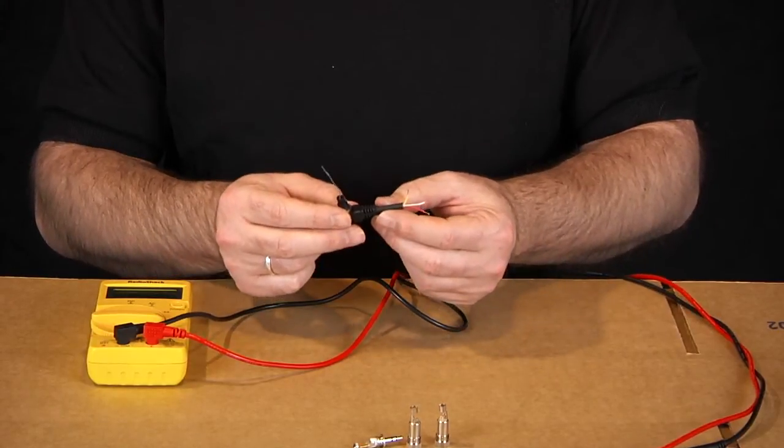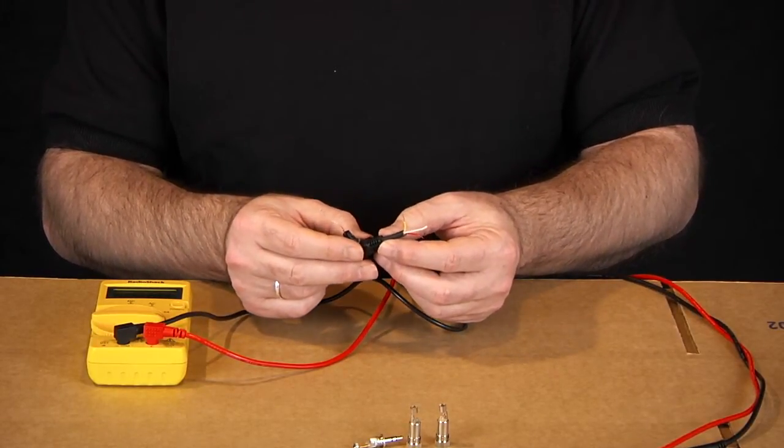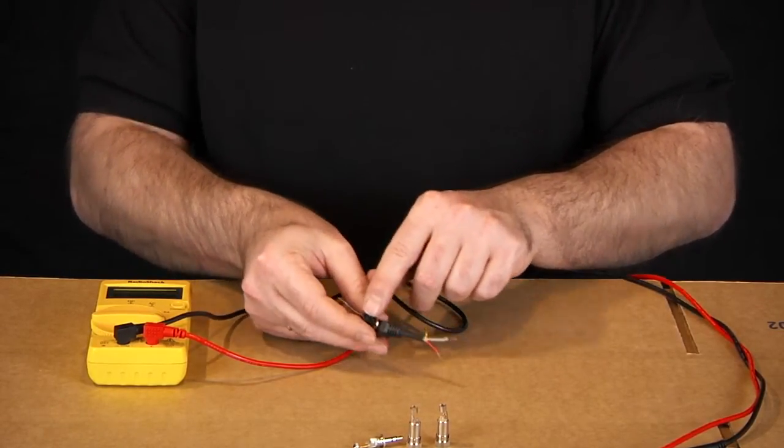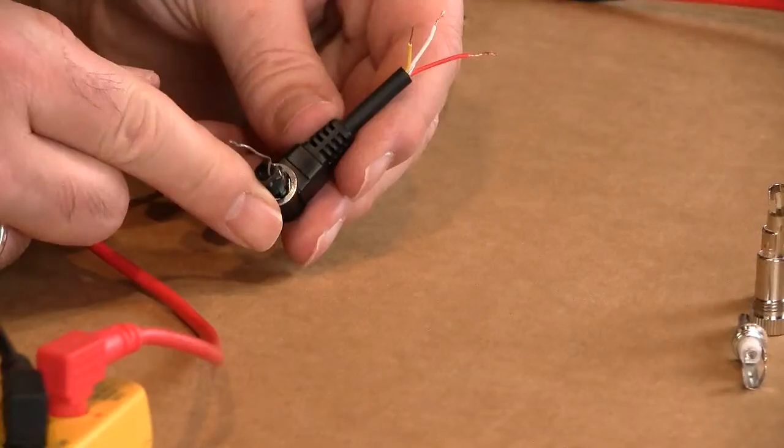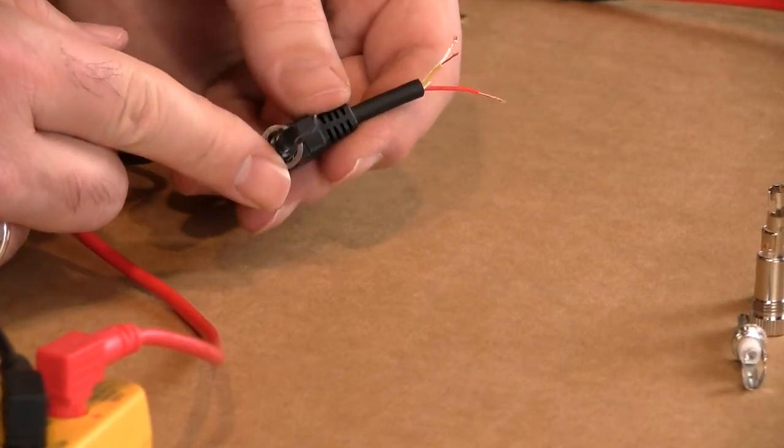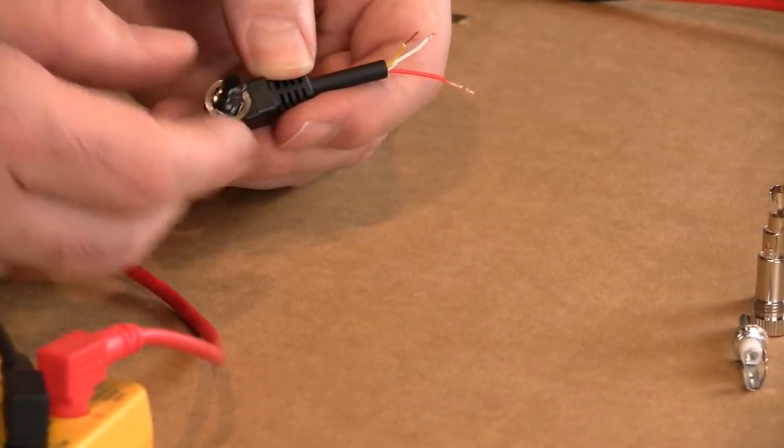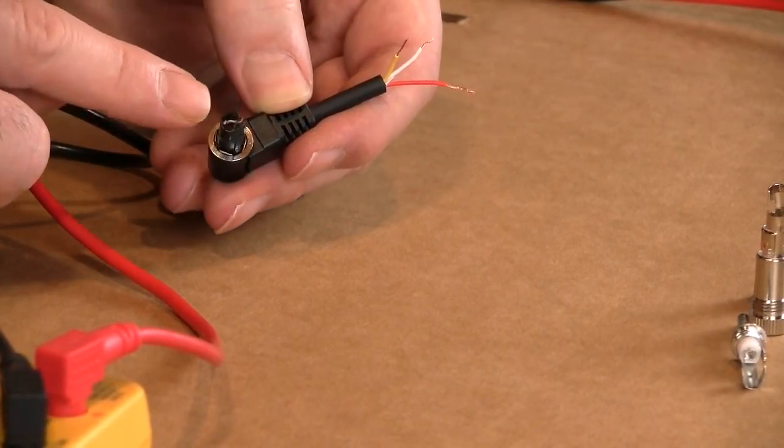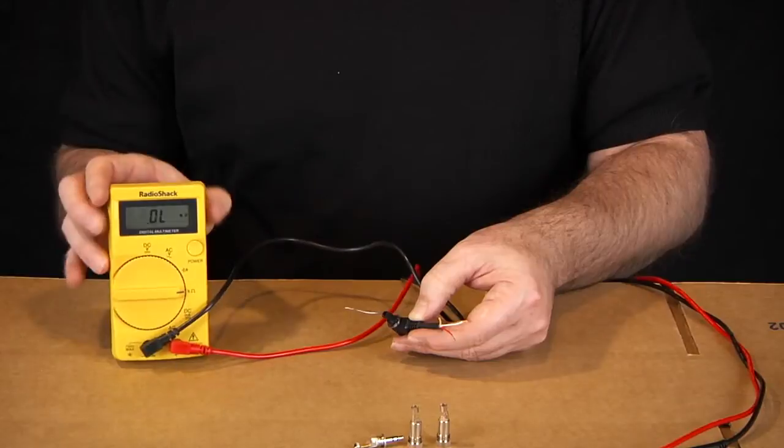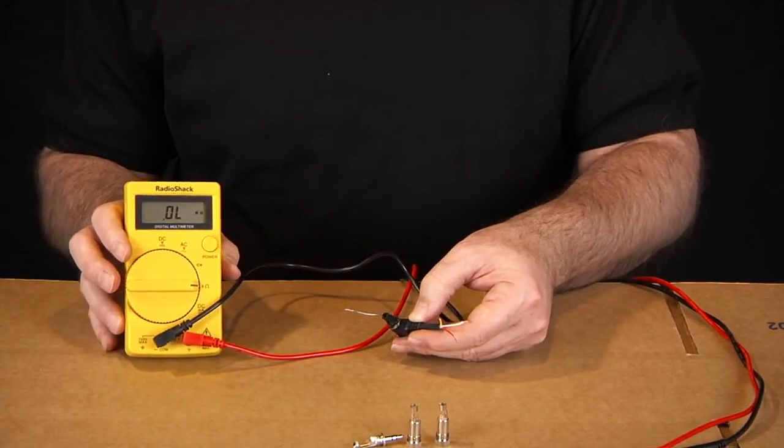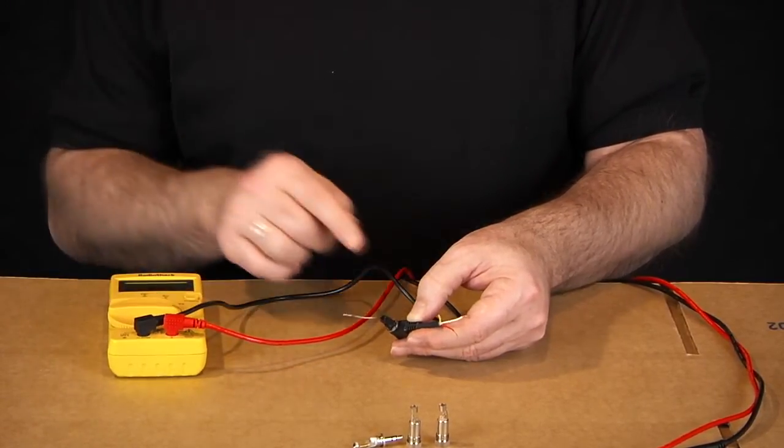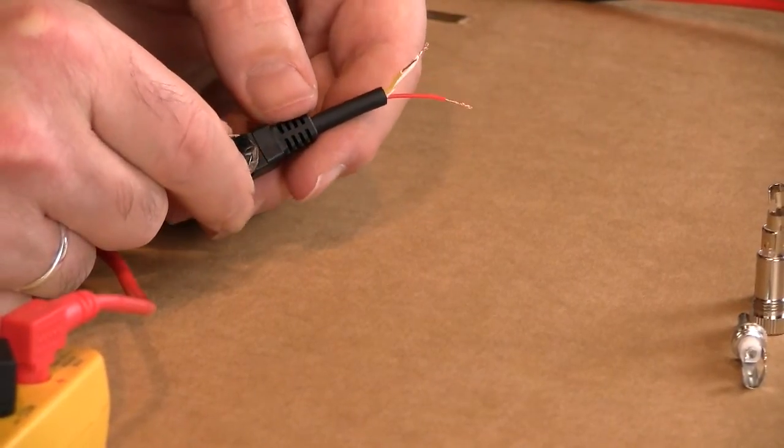Before you start soldering the ends on, you're going to need to know what the pin configuration is for each one of these wires. I find the easiest way to do this is just to take a thin piece of wire, stick it in the hole. And then you're going to want to take a multimeter like this and test to see which wire goes to which pin configuration.